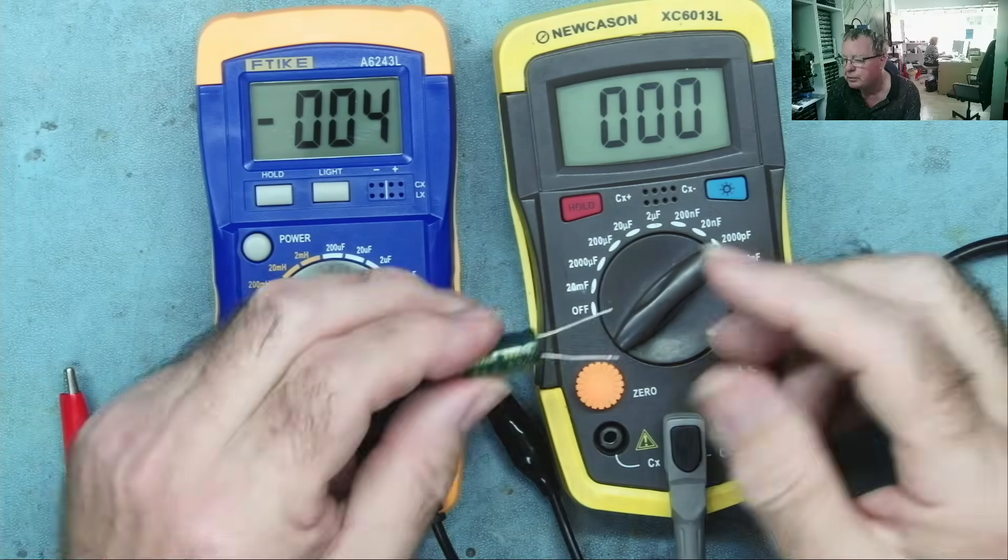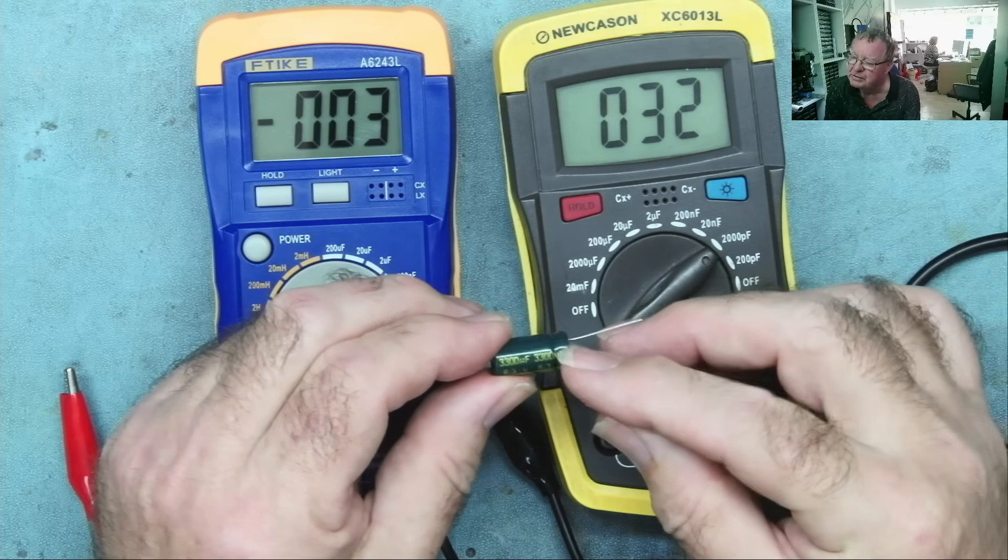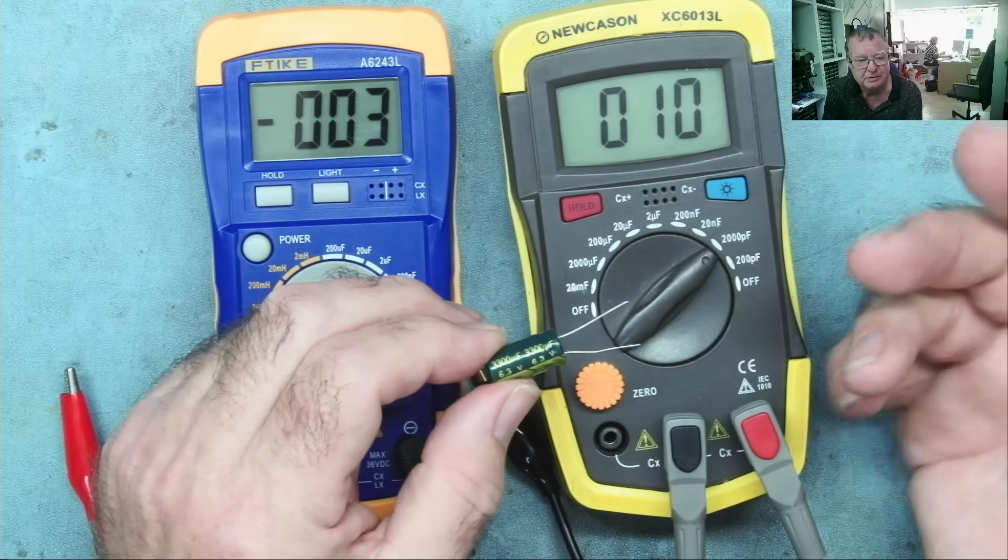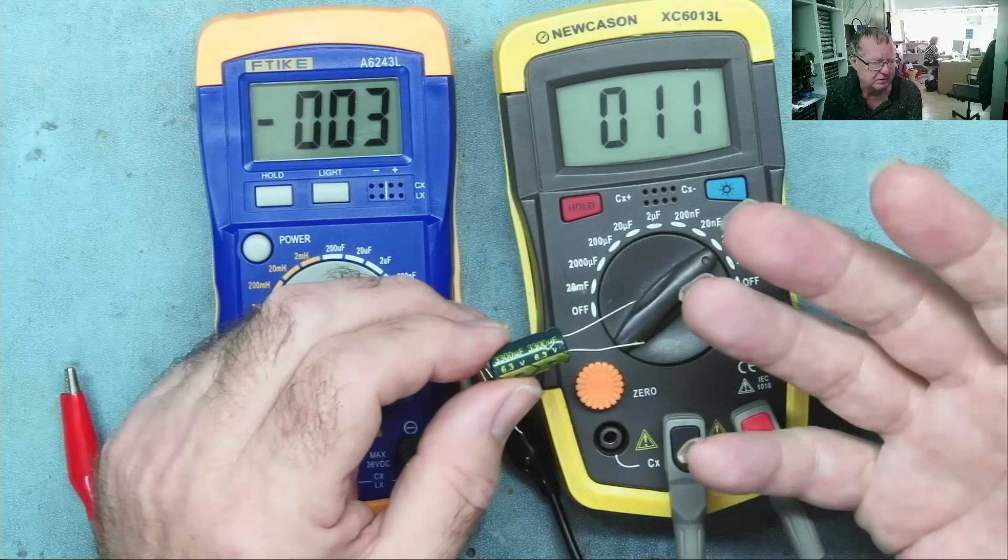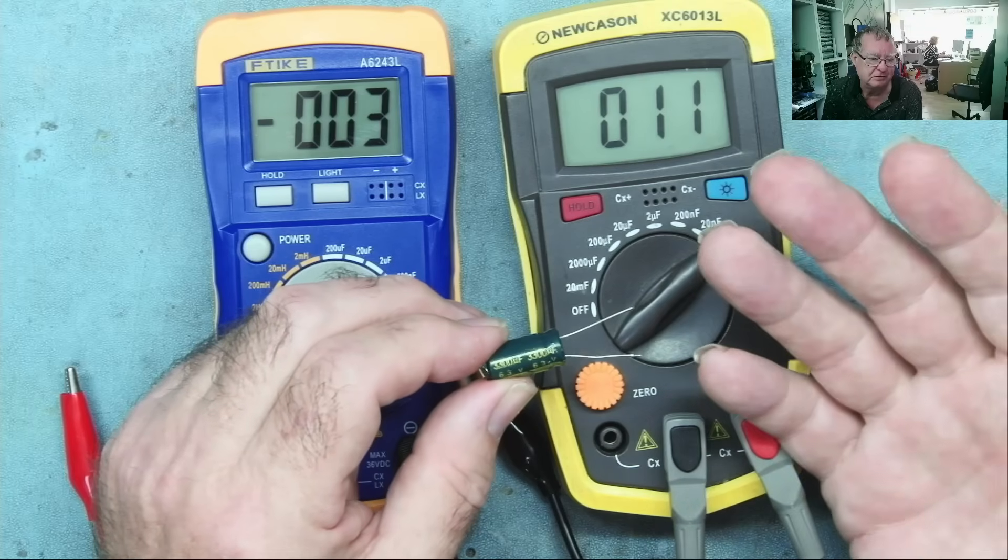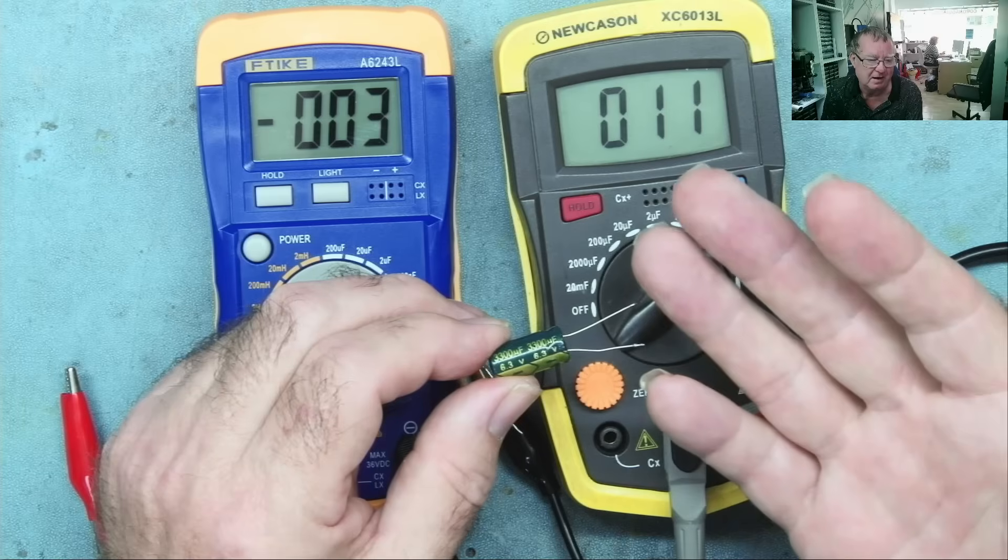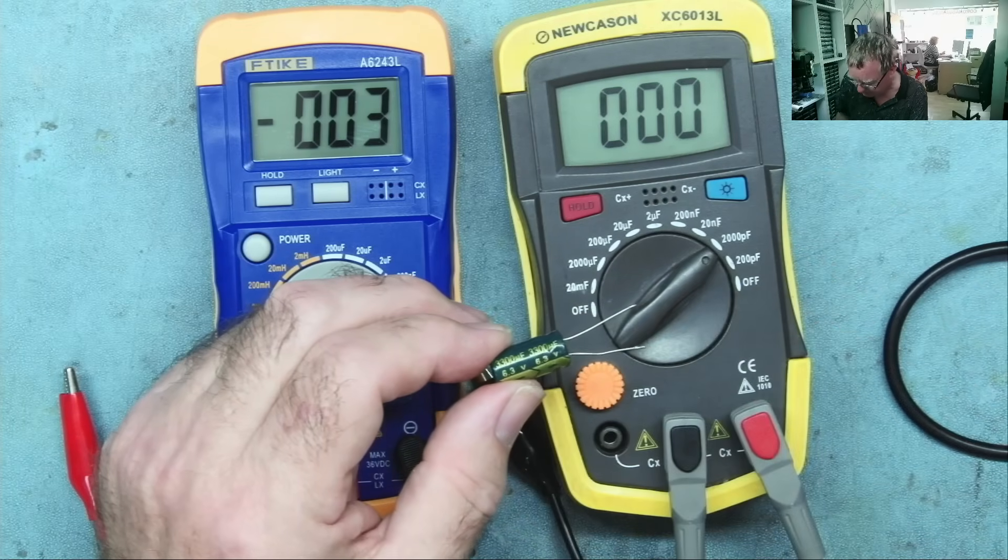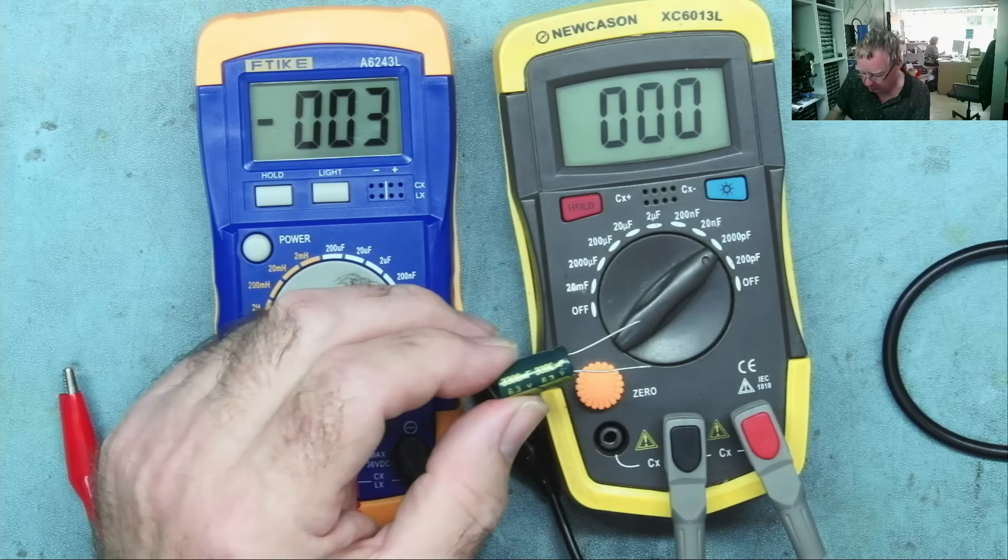We'll go to the other end of the range, or towards it. So this is a 3,300 microfarads. Now, you all know, if you watch this channel, at least, that multimeters will read capacitors. Most of them. But the larger the capacitors, the longer it takes to read. Yeah. It takes time. And they're not good at all with very small capacitors, which these were measuring. I will actually show you that.